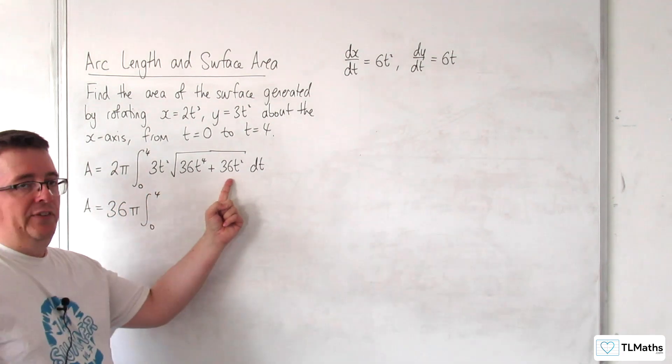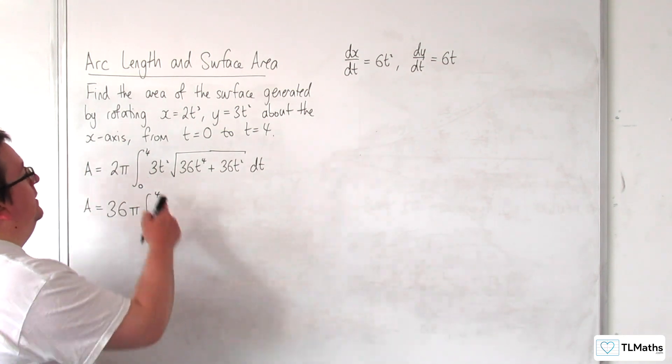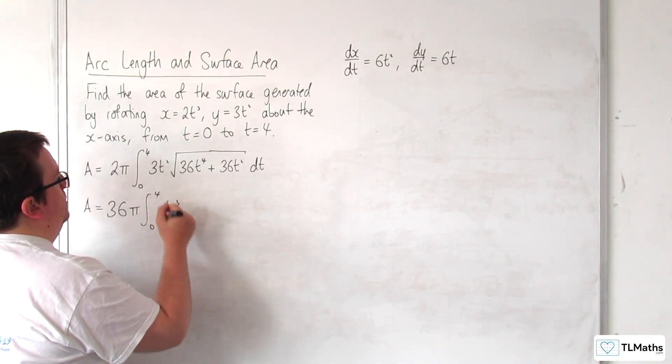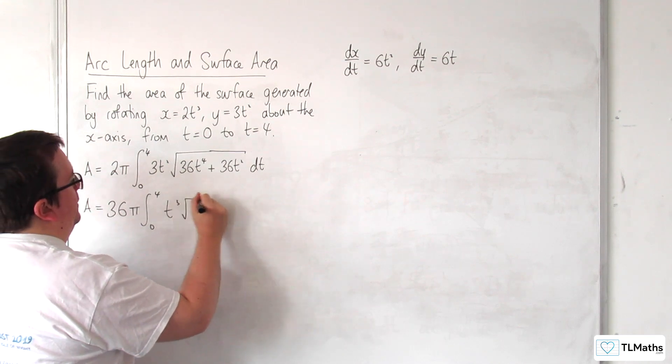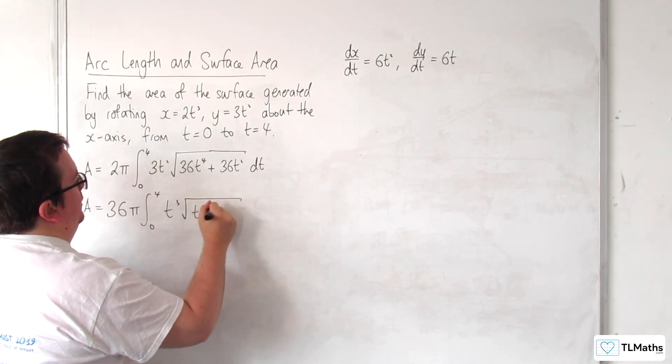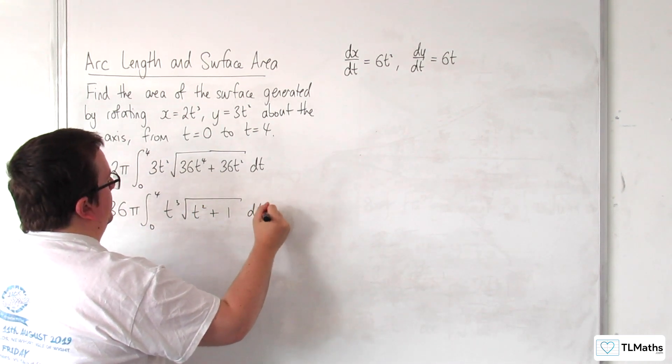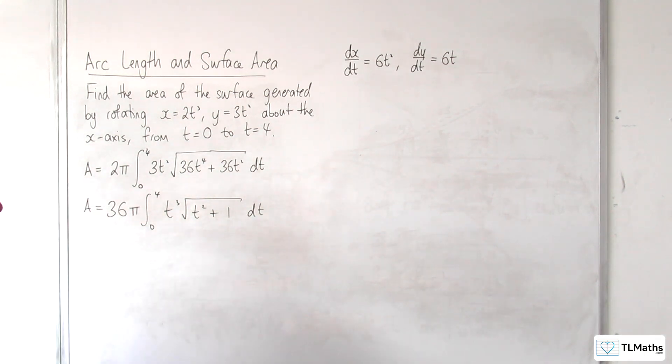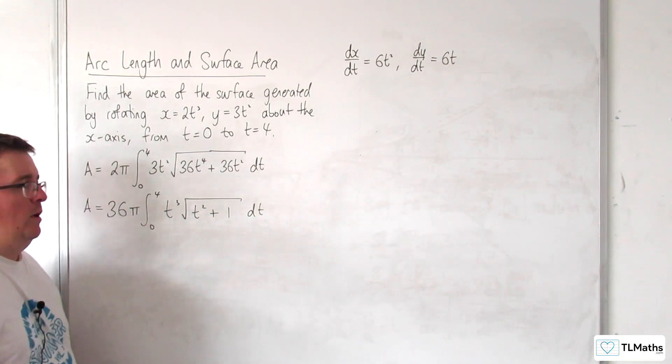I'm factoring out the t squared from inside, so the square root of that is t, so I'm going to get left with t cubed in here, times by the square root of t squared plus 1 dt. Okay, so this is the integral I have.